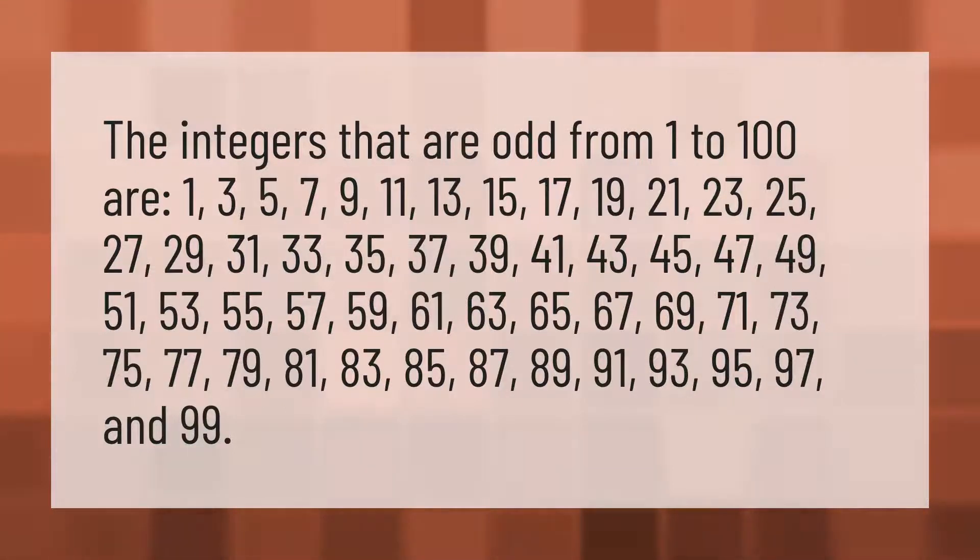The integers that are odd from 1 to 100 are 1, 3, 5, 7, 9, 11, 13, 15, 17, 19, 21, 23, 25, 27, 29, 31, 33, 35, 37, 39, 41, 43, 45, 47, 49, 51, 53, 55, 57, 59, 61, 63, 65, 67, 69, 71, 73, 75, 77, 79, 81, 83, 85, 87, 89, 91, 93, 95, 97, and 99.